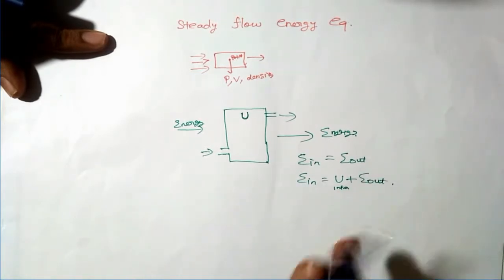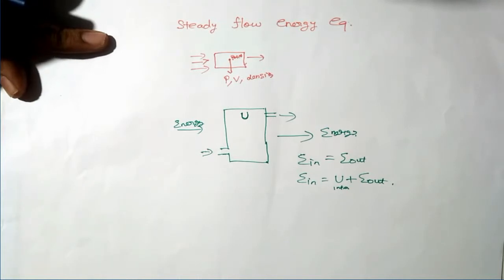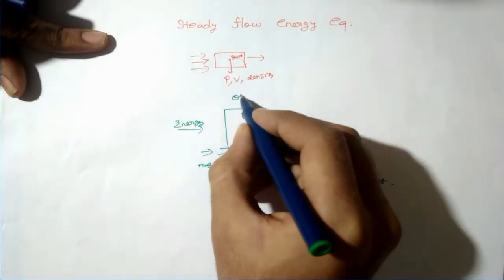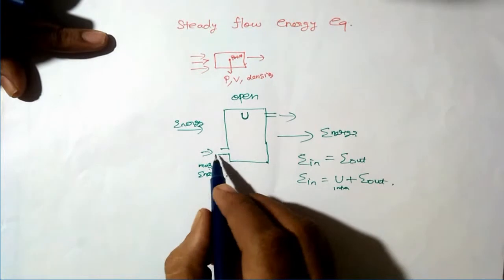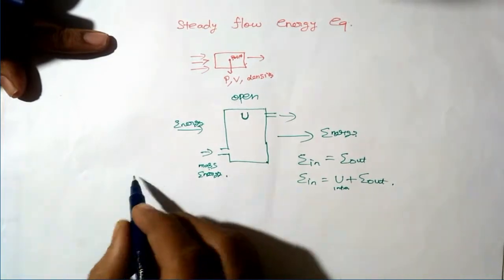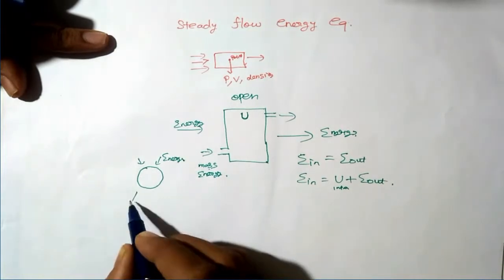For deriving the steady flow energy equation, we consider the system to be an open system. An open system is a system where both mass and energy can go into the system and can come out of the system. A closed system is a system where only energy can go into and come out of the system, not mass.